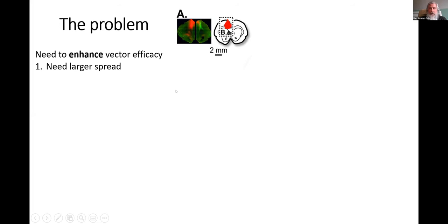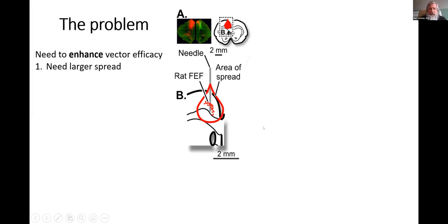The first thing to improve the situation in non-human primates is to enhance vector efficacy. We need larger spread. The monkey brain is about 200 times bigger than a mouse brain or a rat brain. This shows an injection we did in a rat brain in the rat equivalent of frontal eye field. It's a five microliter injection, worked beautifully, filled up basically all of the neurons we wanted in rat FEF.